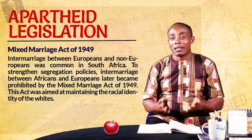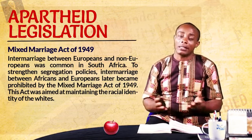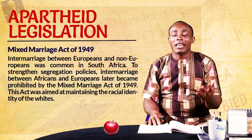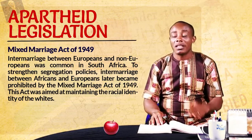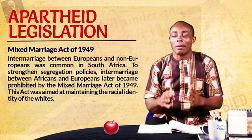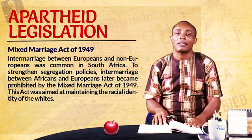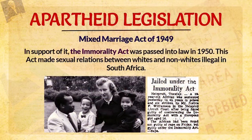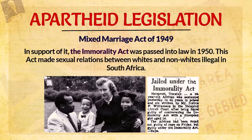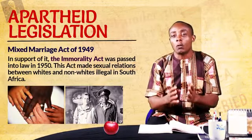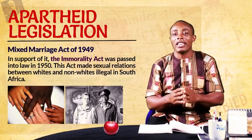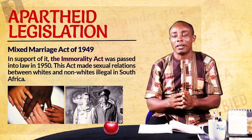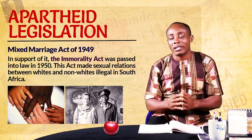This brings us to another act: the Mixed Marriage Act of 1949. Before 1949, intermarriage between Africans and Europeans was common in South Africa. But by this act, Europeans were banned from marrying Africans. There was also a similar act called the Immorality Act, passed into law in 1950. By the Immorality Act, it was illegal for any European to have a sexual relation with an African. Through these acts, Europeans tried to preserve their racial identity, not wanting any white person to marry or have children with a black person. This further strengthened apartheid in South Africa.